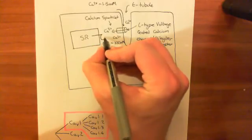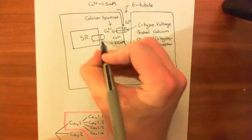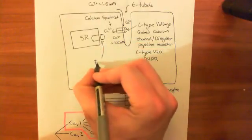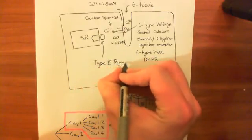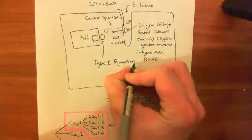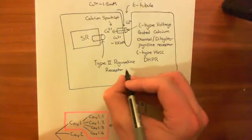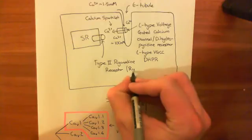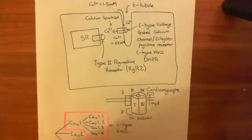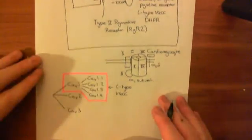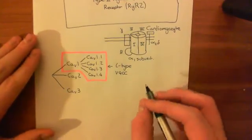In the sarcoplasmic reticulum membrane there is a channel known as the type 2 ryanodine receptor, often abbreviated as RYR2. Let's have a look at this type 2 ryanodine receptor in a bit more detail.